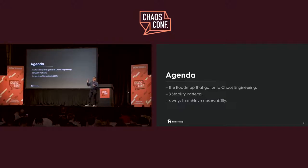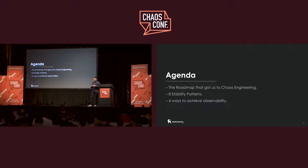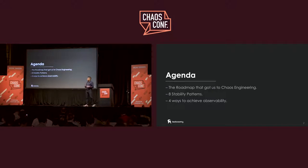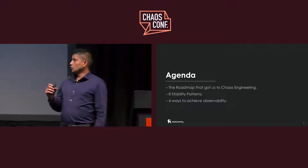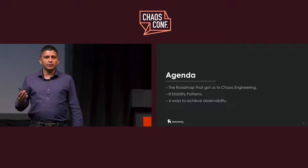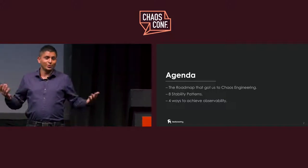The second topic is eight patterns for stability, because when you run the test and something breaks, you want to know how to fix it — how to achieve stability for your system. And finally, four ways to achieve observability, because you want to know what's going on.